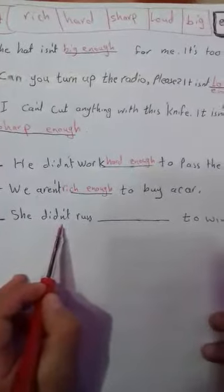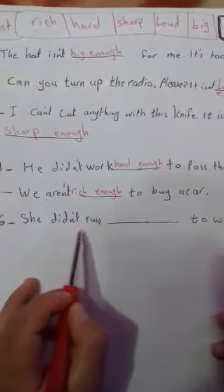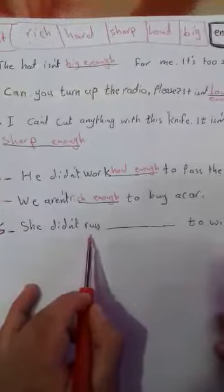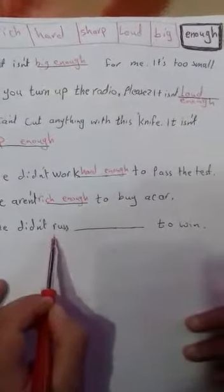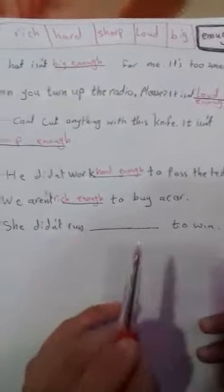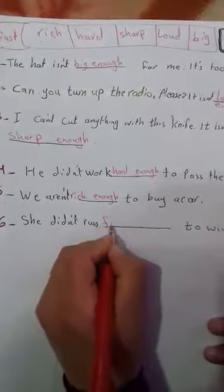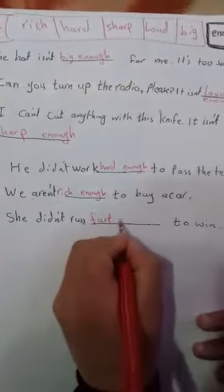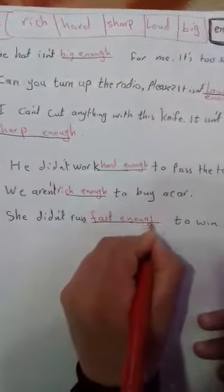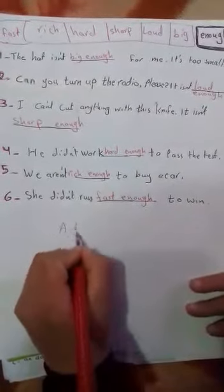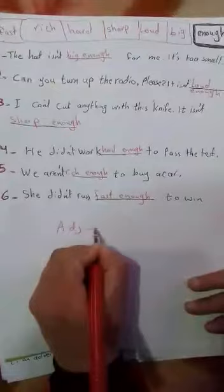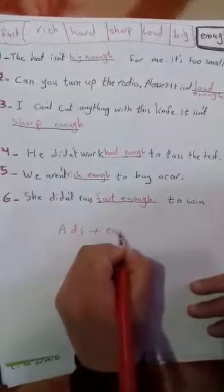What about sentence number six? She didn't run to win. She didn't run fast enough to win. So we put at first adjective, then we put enough.